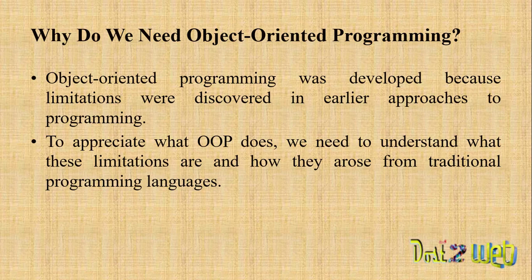First we had structure-oriented programming, then we came to C programming which is procedure-oriented, and then it evolved to object-oriented programming. Every programming language has certain limitations and drawbacks. When those drawbacks were discovered in previous programming languages like C and Fortran, object-oriented programming was developed to address them.